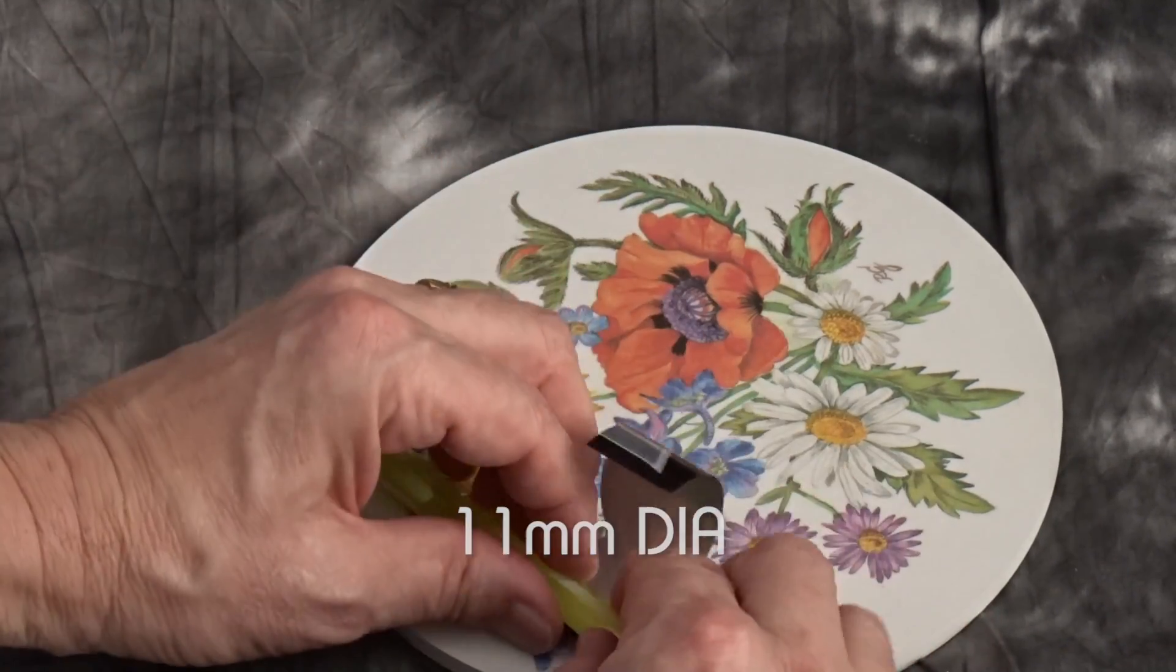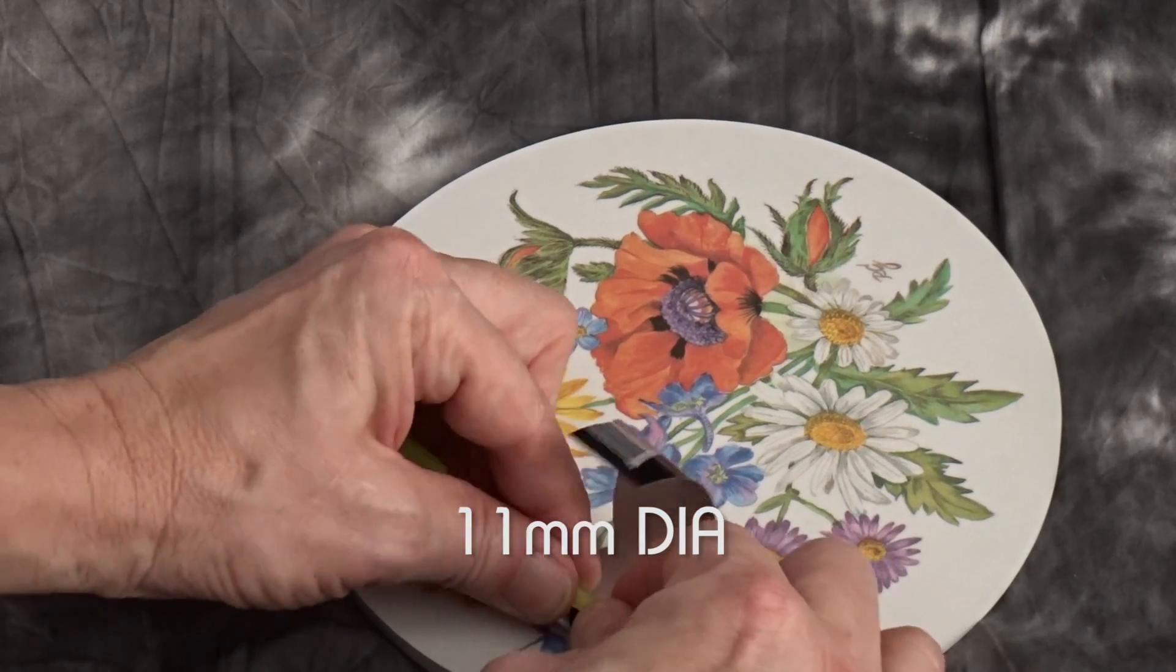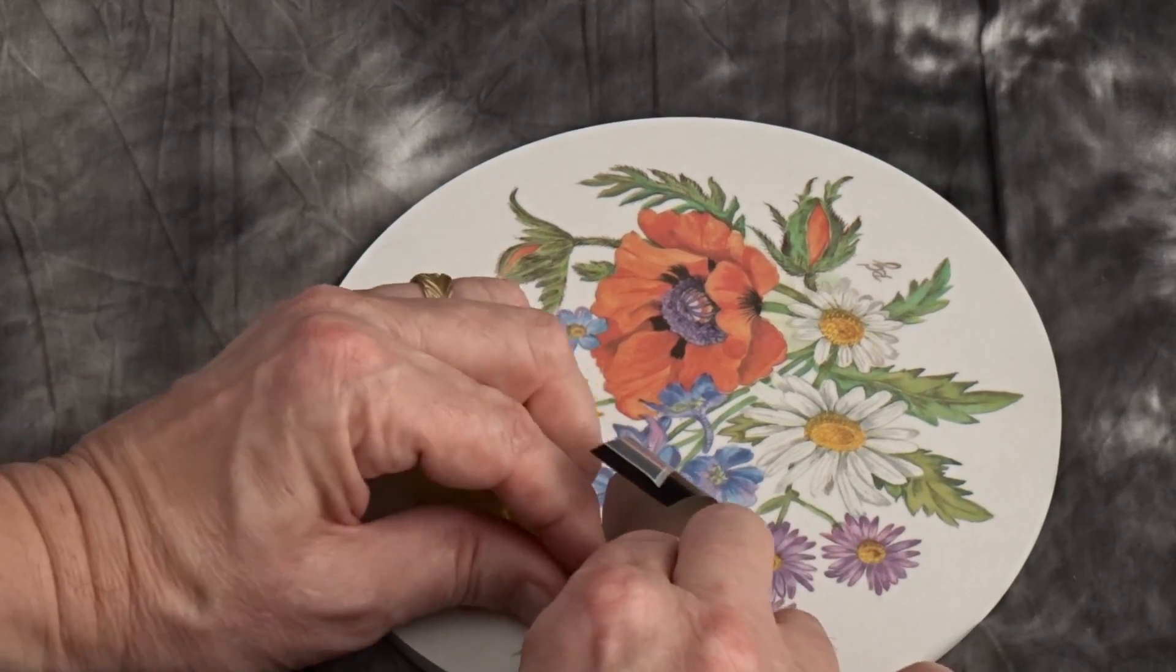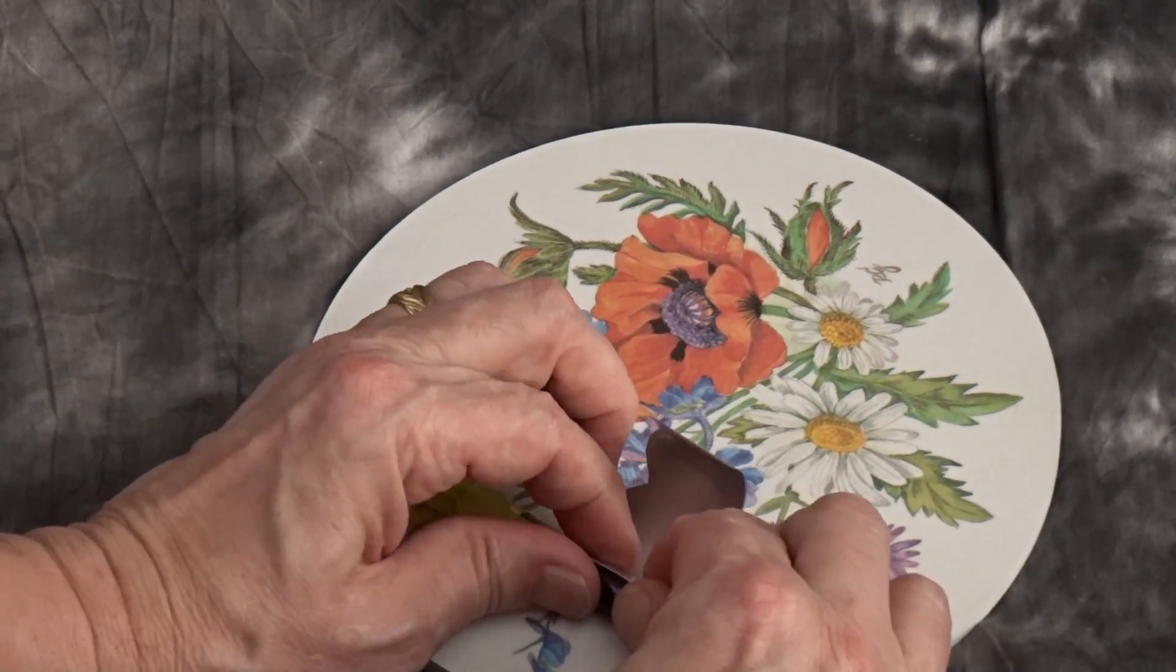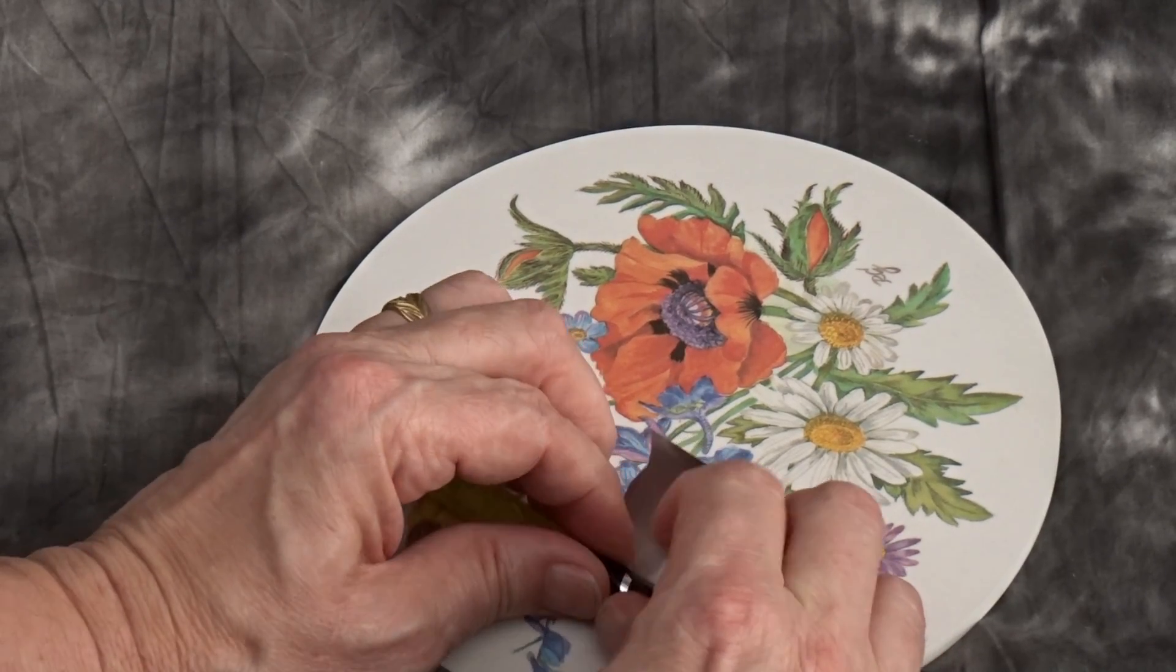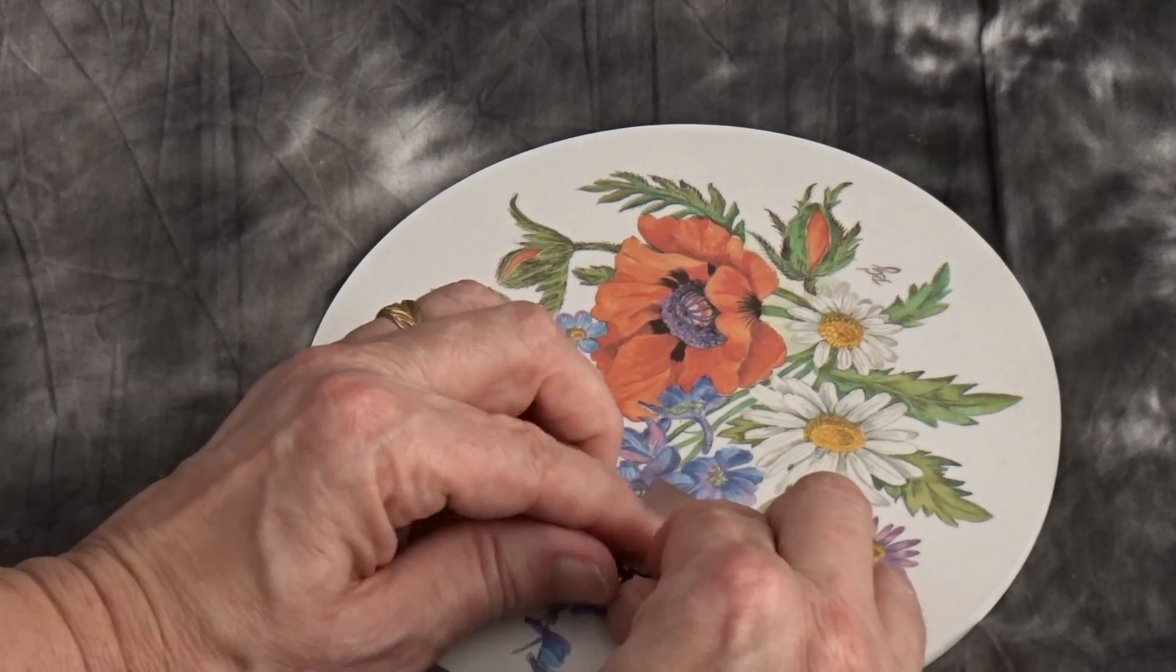Then using an 11mm diameter cylinder, we wrap the aluminum around it to increase the spring. That's about a half an inch for our American folk.